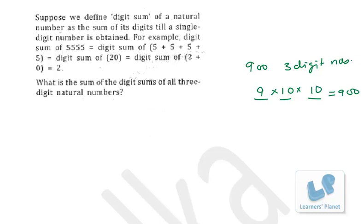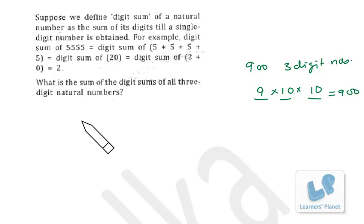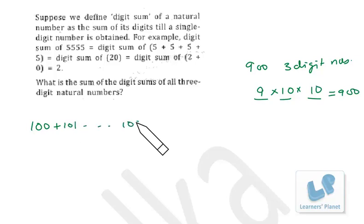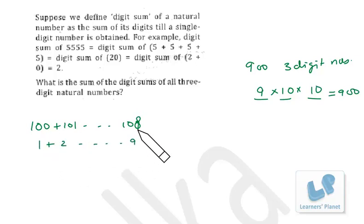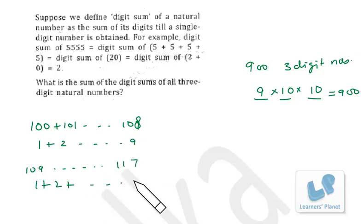We can make 100 sets. From 100 to 108, the digital sums are 1+2+3 up to 9 (since 108 has digital sum 9). Similarly from 109, the next set ends at 117, again giving 1+2 up to 9. Then 118 to 126 gives another set of 1+2 up to 9.